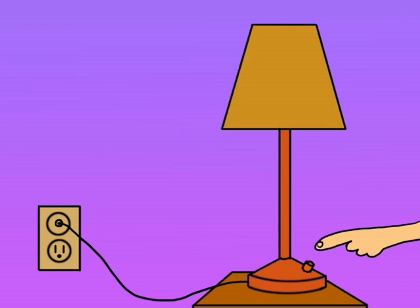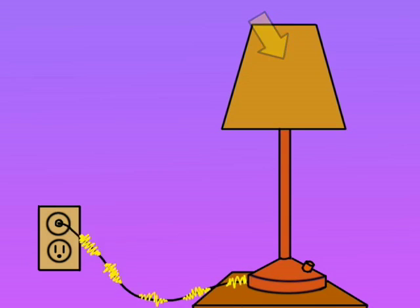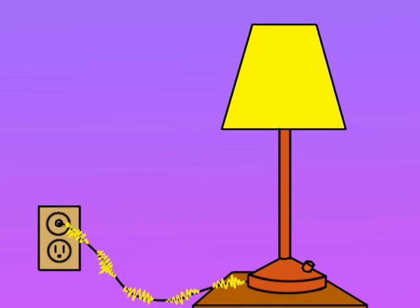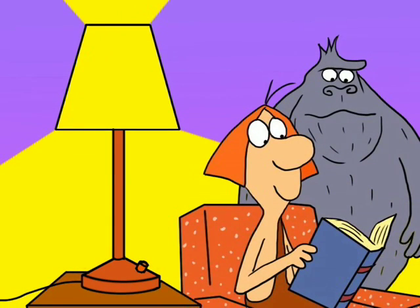When you turn on the lamp, that lets electrical energy flow through the cord, through the switch, up the lamp, and through the light bulb, and there it is changed into light, a different kind of energy. And of course, that's a kind of energy that you can use to help you read.